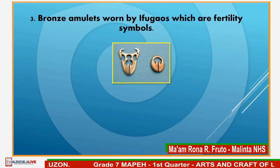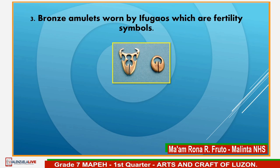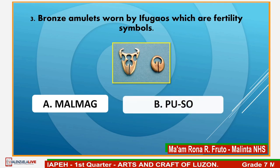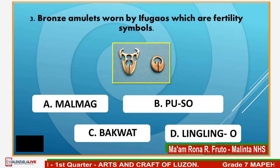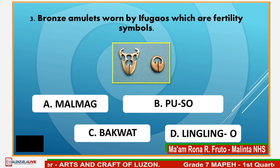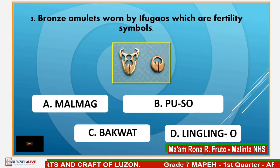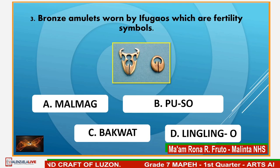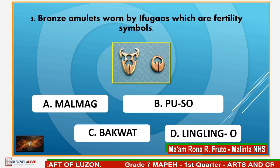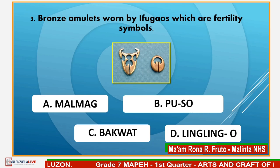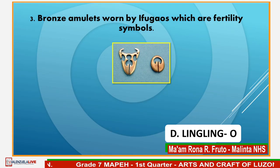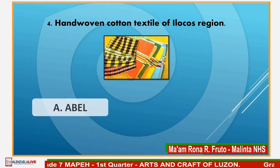Number 3. Bronze amulets worn by Ifugaos which are fertility symbols? A. Malmag, B. Puso, C. Bakwat, D. Lingling-O. Very good! For those who answered letter D, Lingling-O. Number 4.